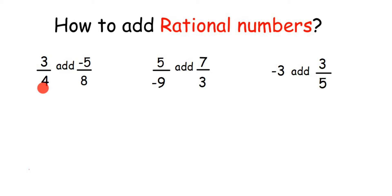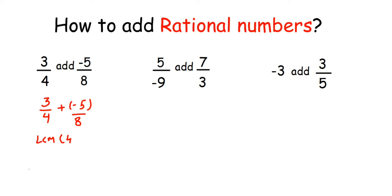Let's do the first question. I am going to explain the first one and you can apply the same thing to the second and third questions. The first one is 3 by 4 plus minus 5 by 8. I am going to put minus 5 in brackets to avoid confusion — so minus 5 by 8. Now I am going to find out the LCM of 4 and 8.